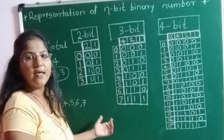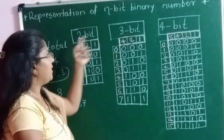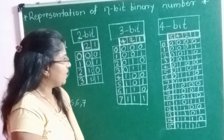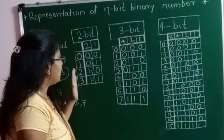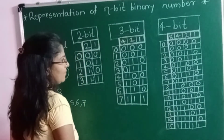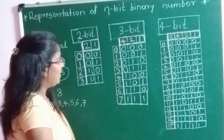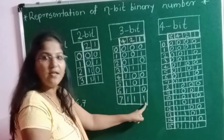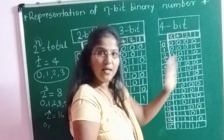This is how we can write binary number representation for n-bits — whether 2-bit, 3-bit, 4-bit, 5-bit, 6-bit, or any number of bits. When writing the whole table, you can remember a pattern: see the rightmost column in each table — it always alternates single 0, single 1, repeating throughout.